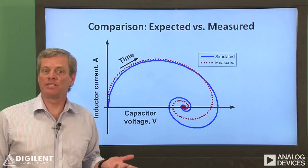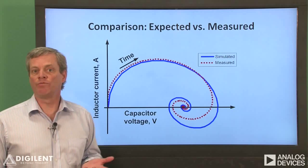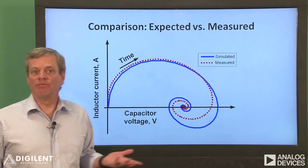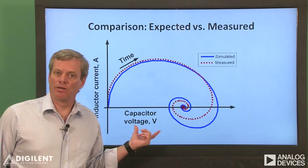The path taken by the system states as the response proceeds can be useful in control system design and analysis. For us at the moment, it's just kind of a nifty plot, especially if you're sort of a nerd like me.